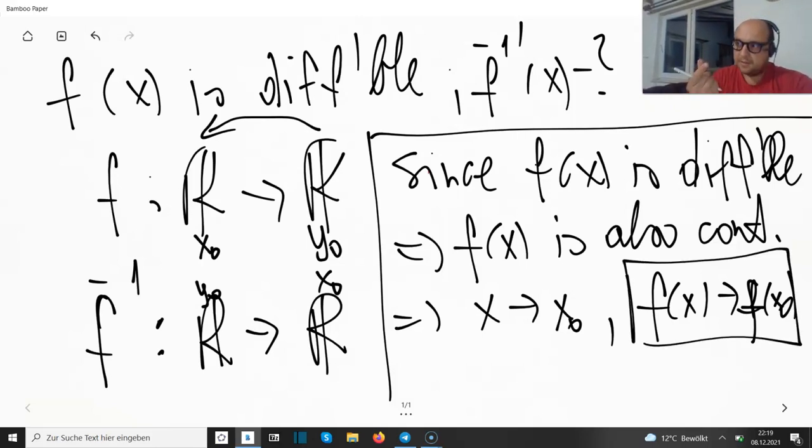Basically, the difference of the arguments is getting infinitely small, and at the same time the difference of the functional values should be getting infinitely small as well, controllable at least.